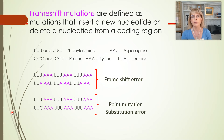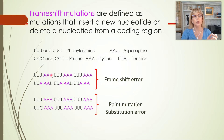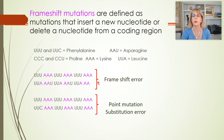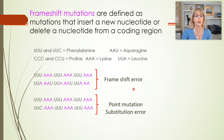We've learned that frameshift mutations are when you put an extra nucleotide in or take a nucleotide out. In that case, you will change not only that codon, but all of the ones afterwards. Frameshift mutations are almost always catastrophic because they change so much.